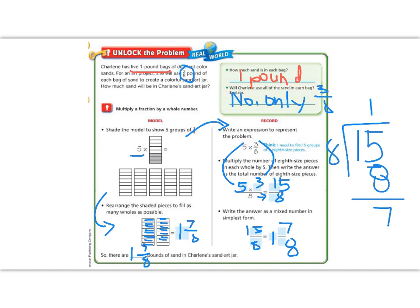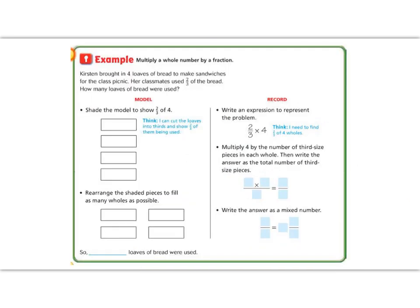Great job so far, fifth graders. Let's practice this skill again with a second model. Kristen brought in four loaves of bread to make sandwiches for a class picnic. Her classmates used two-thirds of the bread. How many loaves of bread were used? We're going to shade the model to show two-thirds of four.